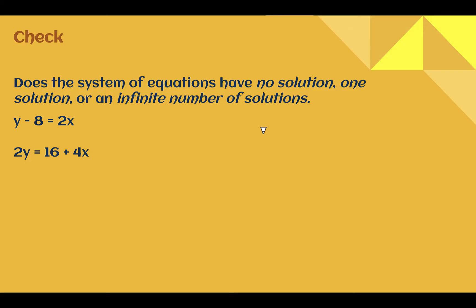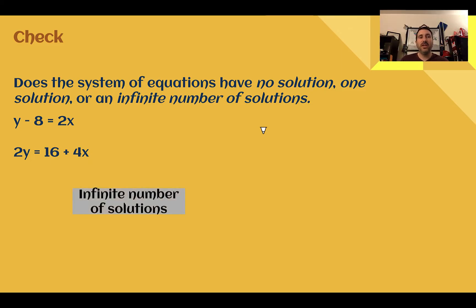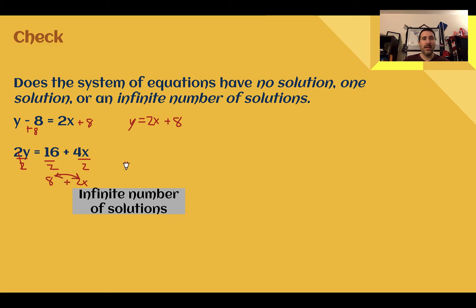Check your understanding: does the system have no solution, one solution, or an infinite number of solutions? Pause the video now and complete the check. Check your answer: this one has an infinite number of solutions. For the top one, add 8 to both sides to get y equals 2x plus 8. For the second one, divide both sides by 2, giving y equals 2x plus 8 as well. Same exact equation both times — it's an infinite number of solutions since this is the same line.